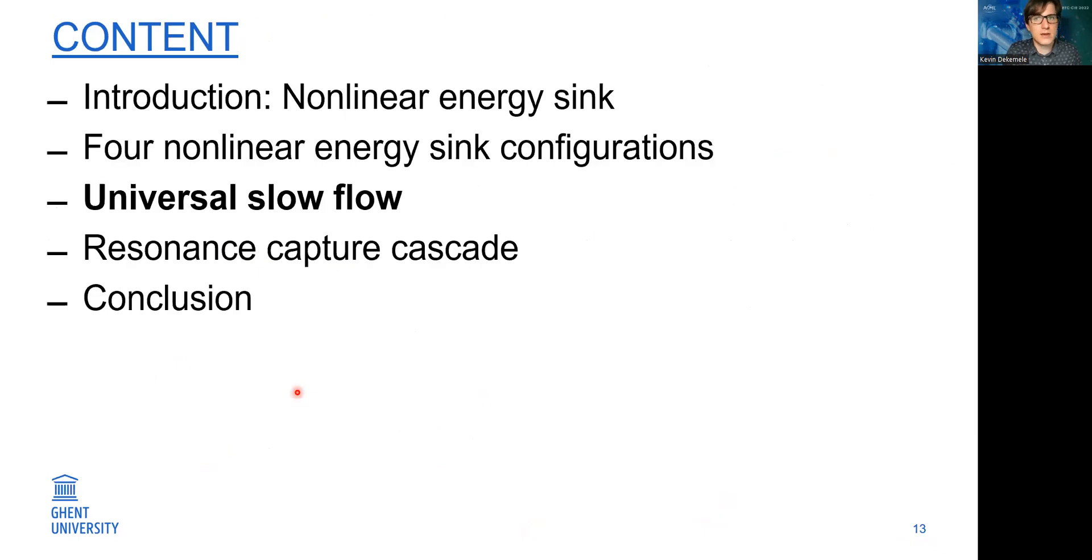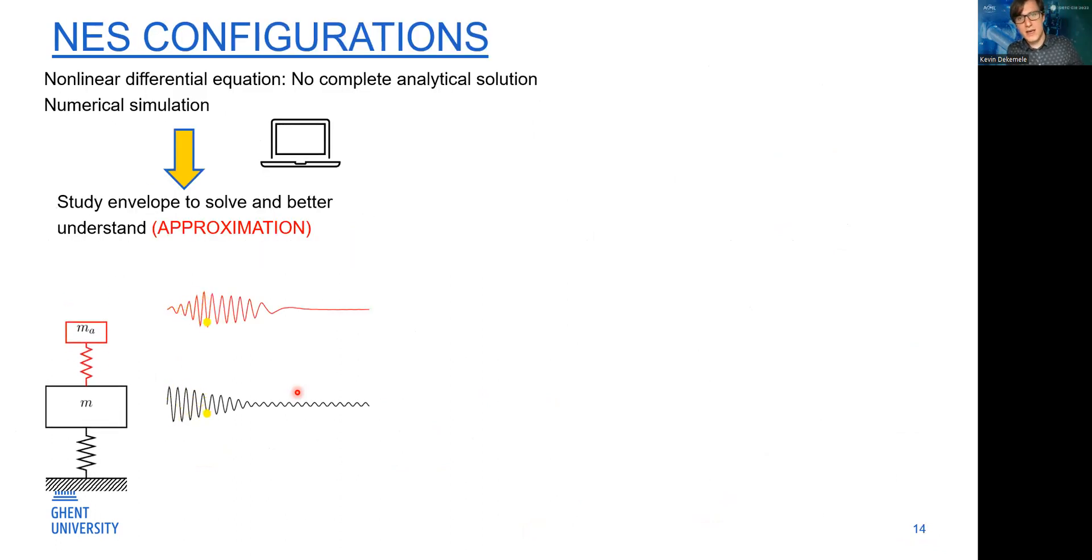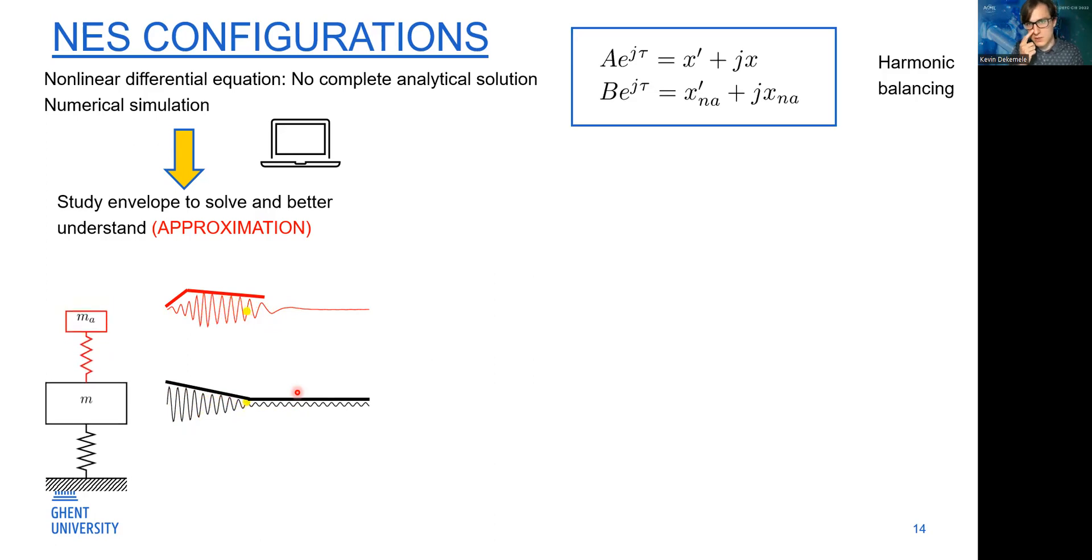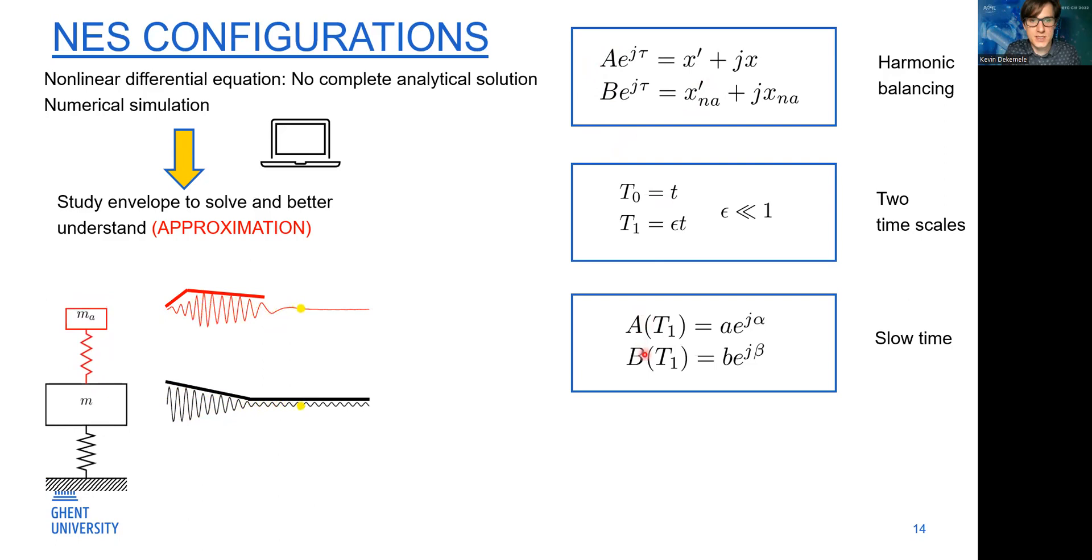Now we have four different configurations with different differential equations. I'll now show you can actually describe all four in one formation. We will not analyze the differential equation as it is, because to get time series, the only thing we can do is an ODE45 simulation, which is very time-consuming and doesn't have much insight. What we do, typical in nonlinear dynamics, is study the envelope instead of the full vibration. First of all, there is harmonic balancing, where this a and b are the envelopes. We split the behavior up in slow and fast time, but we're only interested in slow time.